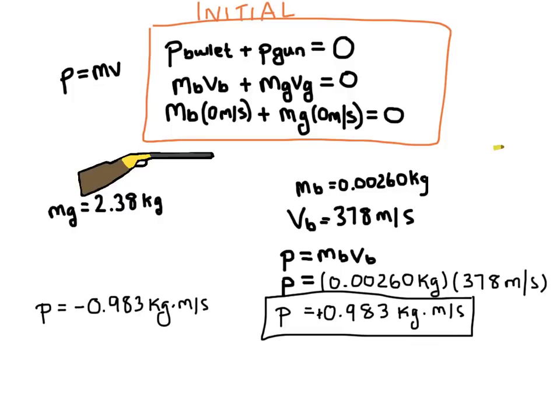We can actually calculate how quickly the rifle would kick back. The missing part that we have here is the velocity of the gun, but we can solve this because we know the mass of the gun and we know the momentum. Because the momentum is exactly equal to the momentum of the bullet. We should see a much smaller velocity than the bullet because the mass is so much greater.